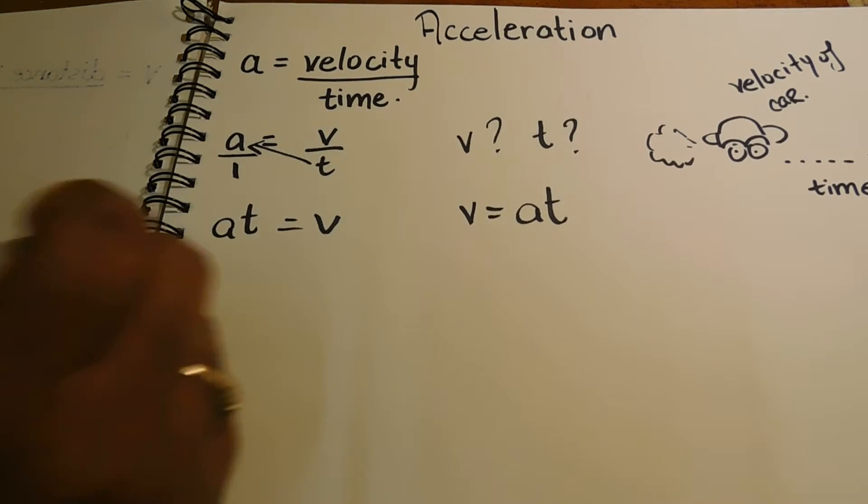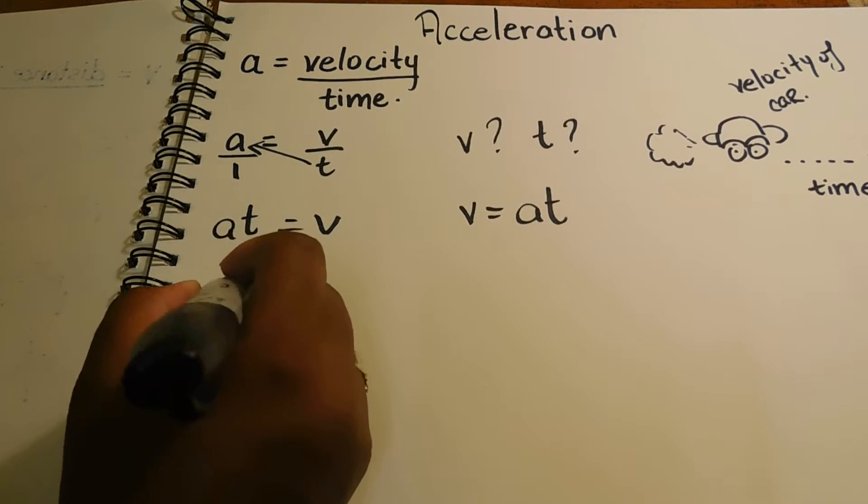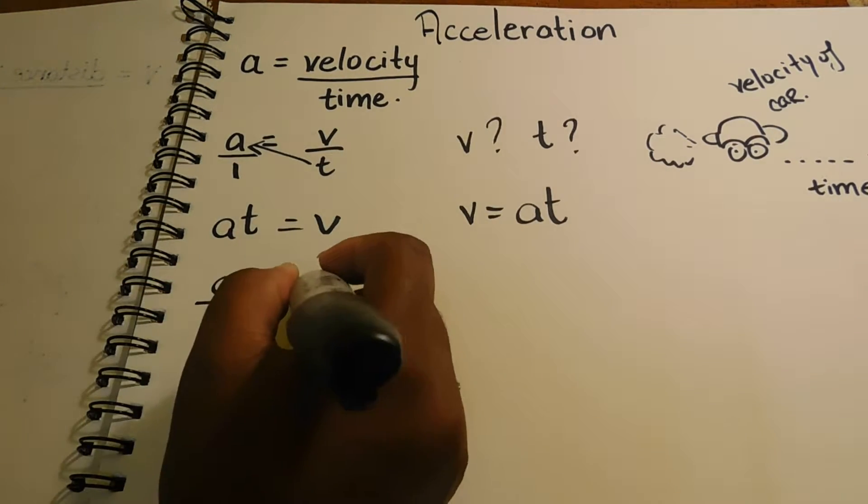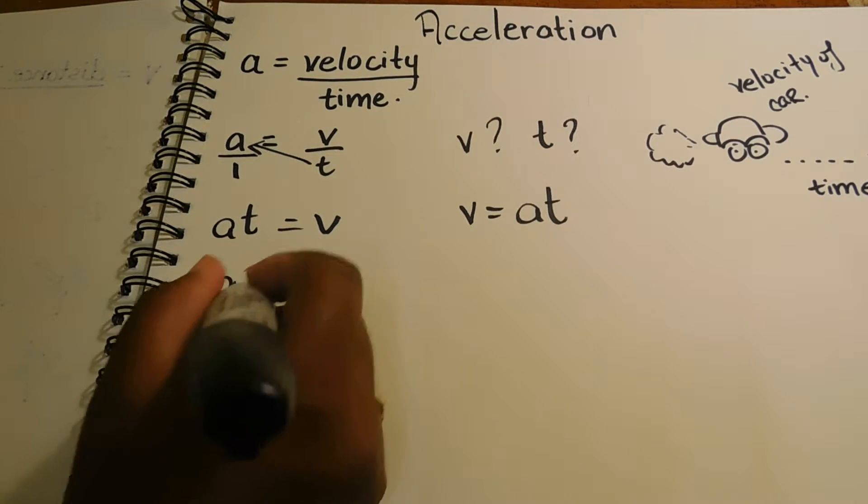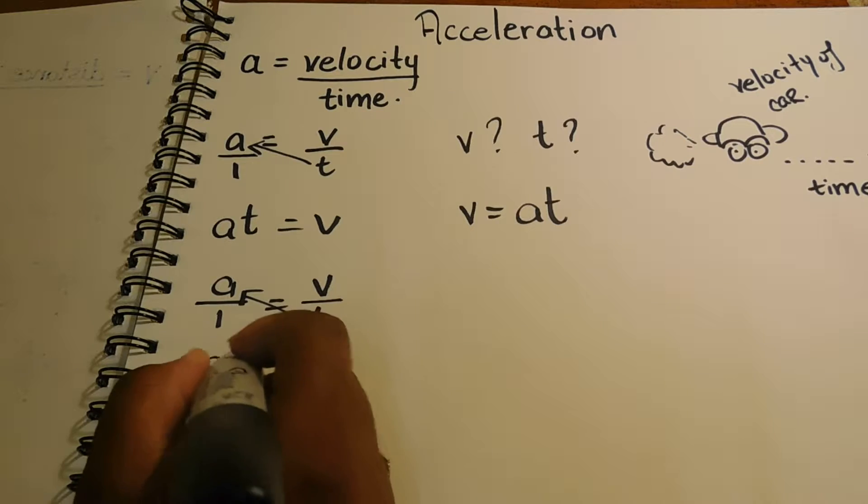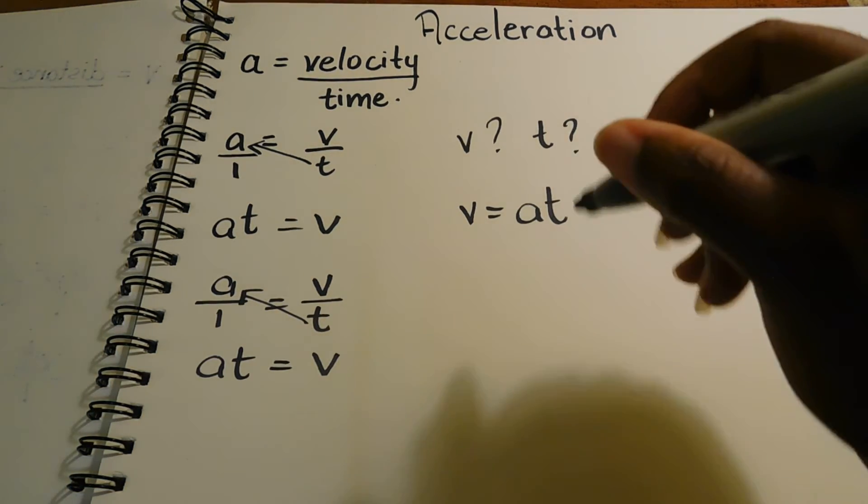Cool! And now, once again, we're searching for t. So you have a over 1 equals to v over t. You transpose again, and you're left back with a t equals to v. But it has a friend, because we're looking for t.